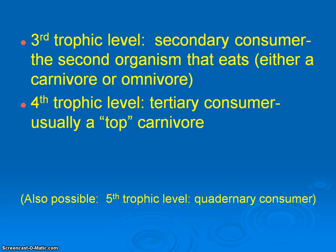The rabbit is going to be the primary consumer eating the grasses, then the hawk is going to be the secondary consumer which eats the rabbit. The fourth trophic level is your tertiary consumer — this is the top predator.